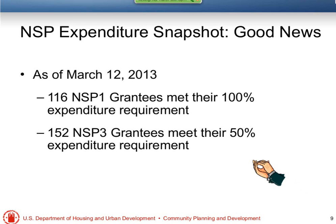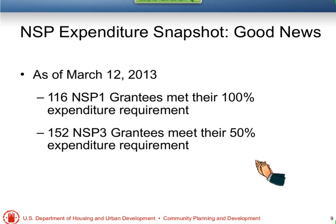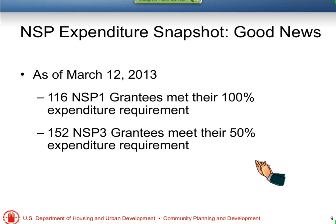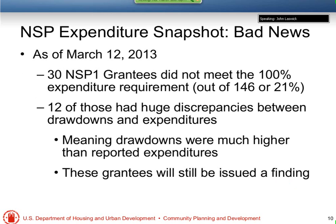We wanted to give you an update on the progress of these expenditure deadlines for NSP-1 and NSP-3. As you know, these are on a rolling deadline, so everyone has different deadlines. As of March 12th, the good news is that 116 NSP-1 grantees met the deadline and 152 NSP-3 grantees met the 50% expenditure deadline. Now we'll talk about the not-so-good news — what John was referring to as pathetic news.